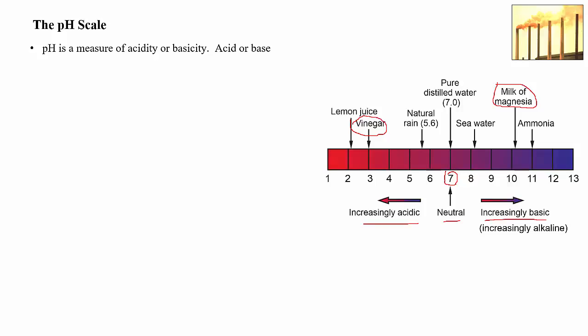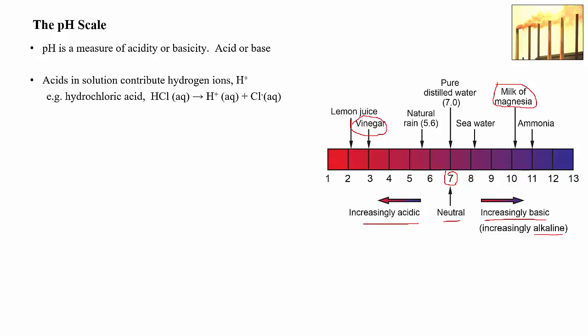Getting a bit technical: when an acid goes into solution — mixed with water — the acid molecule breaks up and contributes hydrogen ions (H+). For example, hydrochloric acid breaks up in water into ions, and it is the hydrogen ion that makes the solution acidic. The mathematical definition of pH is: pH = -log₁₀[H+], where the molarity is the number of moles per liter. Students without a chemistry background don't need to know these technical details, but the key takeaway is that there is a solid mathematical definition for pH. It is a precise, quantitative measure of acidity that we can easily measure with high accuracy.